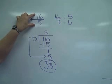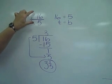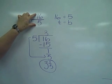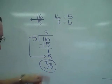16 fifths is considered improper because the top is bigger than the bottom. So 16 fifths is not a simplified form. 3 and 1 fifth is the simplified form.